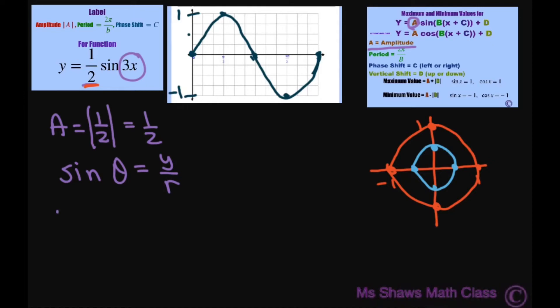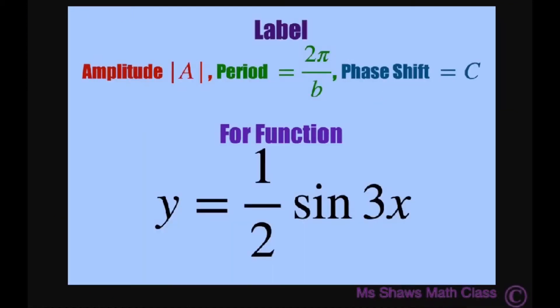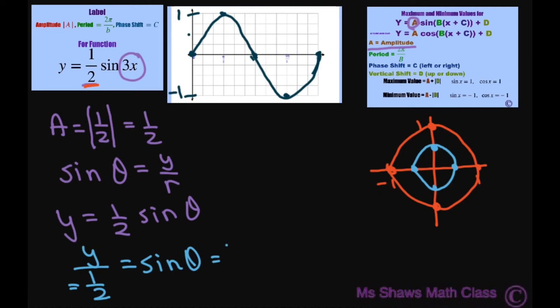if you have y equals one-half sine of, let's just put theta, then you divide both sides by one-half. You get y divided by one-half equals sine of theta. So this equals your r. Sorry about that. So this is y divided by r.